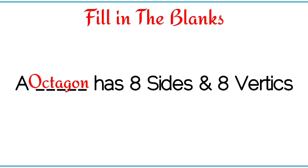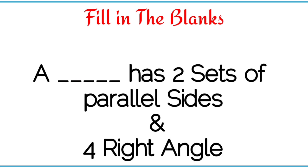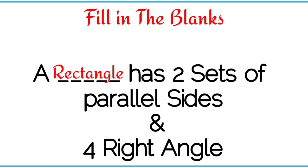A dash has two sets of parallel sides and four right angles. Rectangle — a rectangle has two sets of parallel sides and four right angles.